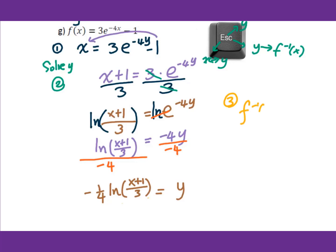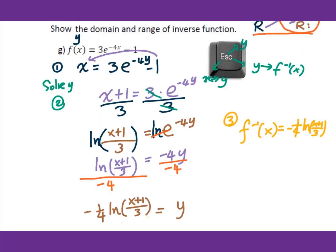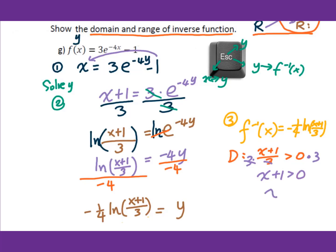Finally, find the domain and range of the inverse function. Since the inverse is a logarithm function, the argument (x plus 1) over 3 must be greater than 0. Solve the inequality: multiply by 3, giving x plus 1 greater than 0, so x greater than negative 1. That is the domain of the inverse function. The range is all real numbers.